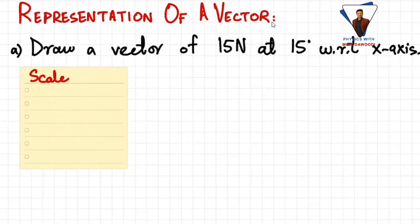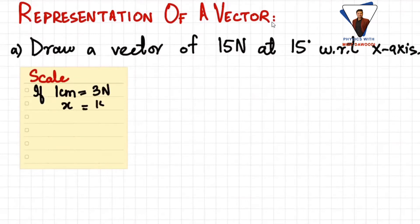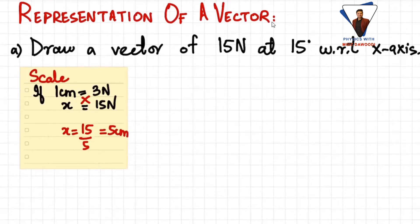In this case I am using the scale: one centimeter equals three newtons. So x centimeters equals 15 newtons. Cross-multiplying to find x, I get a value of 5 centimeters, which means 15 newtons are represented by 5 centimeters.